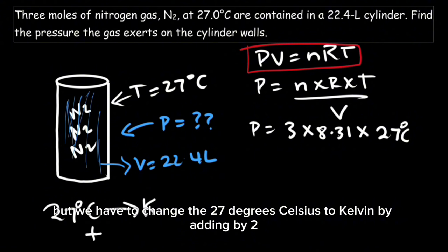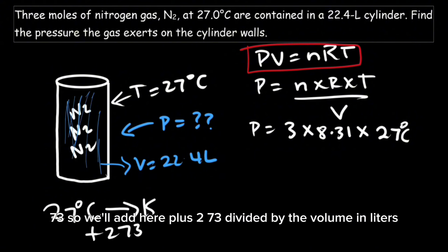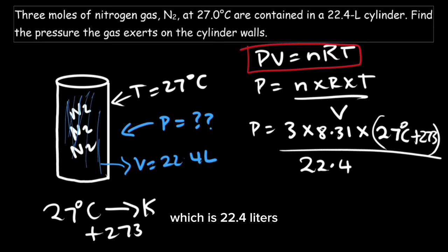Celsius to Kelvin by adding 273. So we'll add 273, divided by the volume in liters which is 22.4 liters.